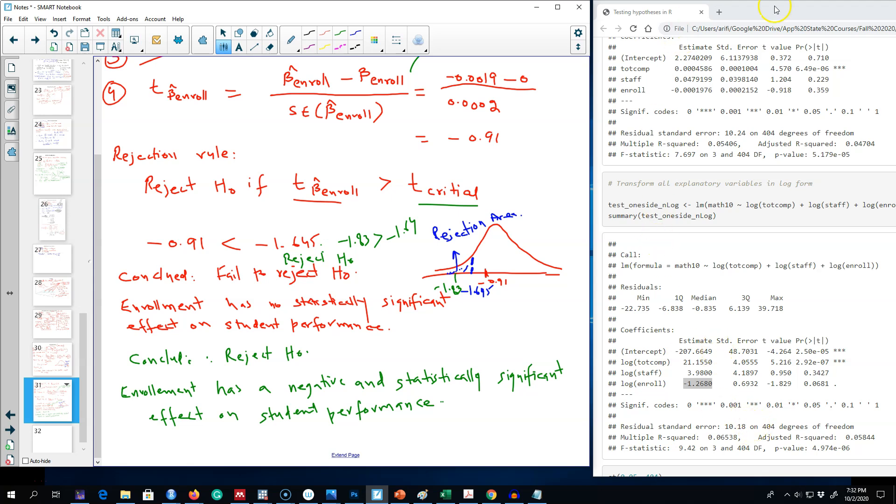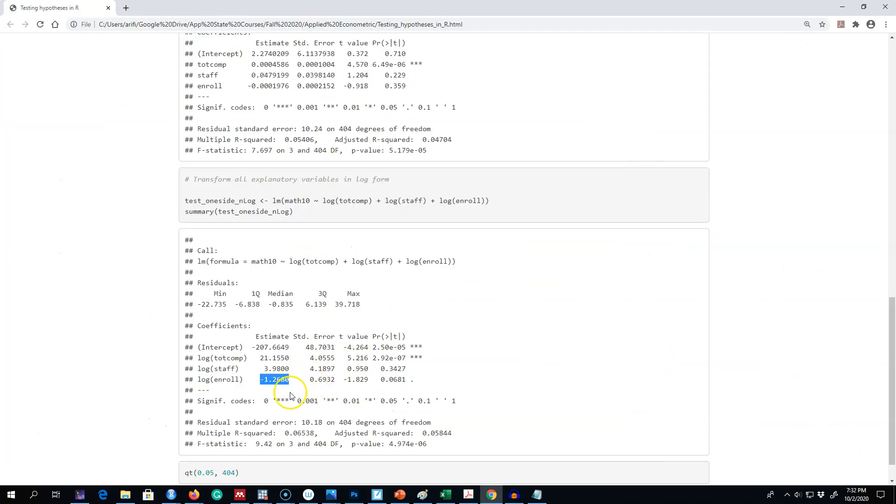When you get these results in R, R actually reports everything right here. See here, t-values are already reported alongside these coefficient values. Remember, we calculated the t-value as this coefficient divided by the standard error, and we get minus 1.83. This is already given here.